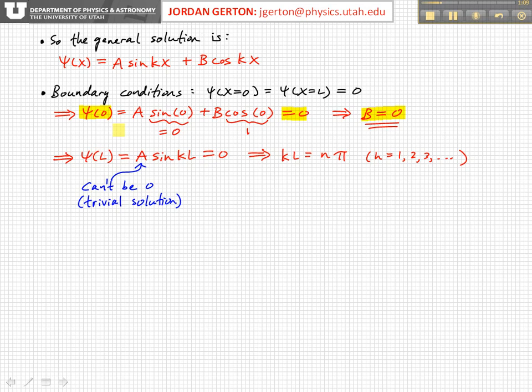Now if we apply the other boundary condition, that is at x equals L, ψ(L) is equal to zero. And so this tells us that this will give us particular constraints on sin(kL). We should note that there's two ways for this wave function to be equal to zero, that is A can be equal to zero, but if A were equal to zero, then this would be a completely trivial solution.